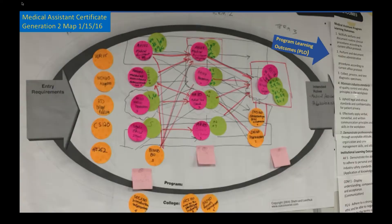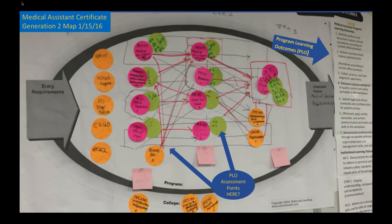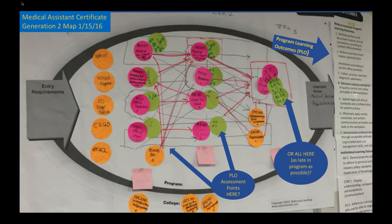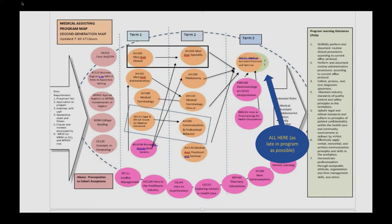In this first version of the map, the question was: do we want PLO assessment points throughout the program — terms one, two, and three — or do we want them all as late as possible?